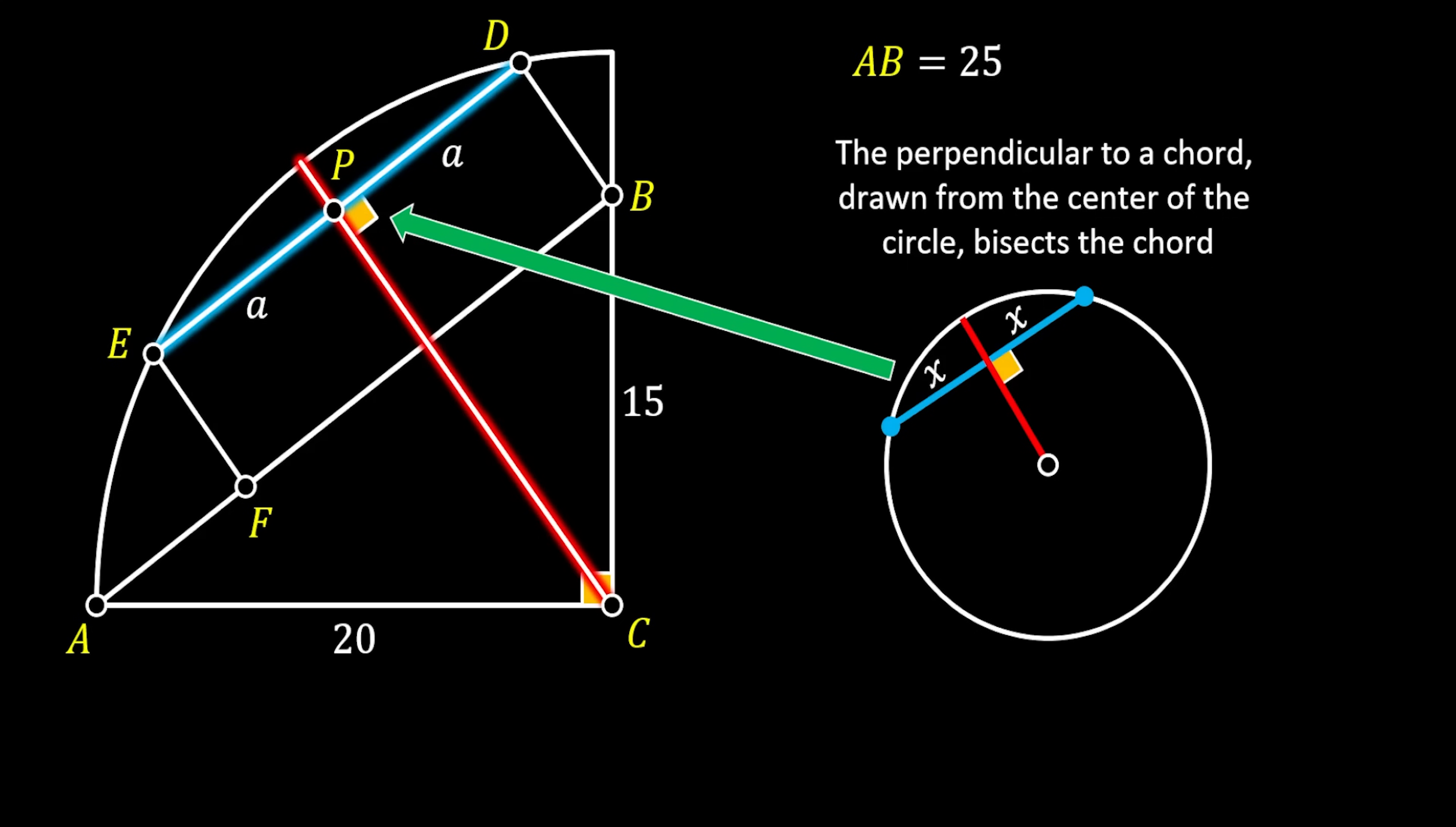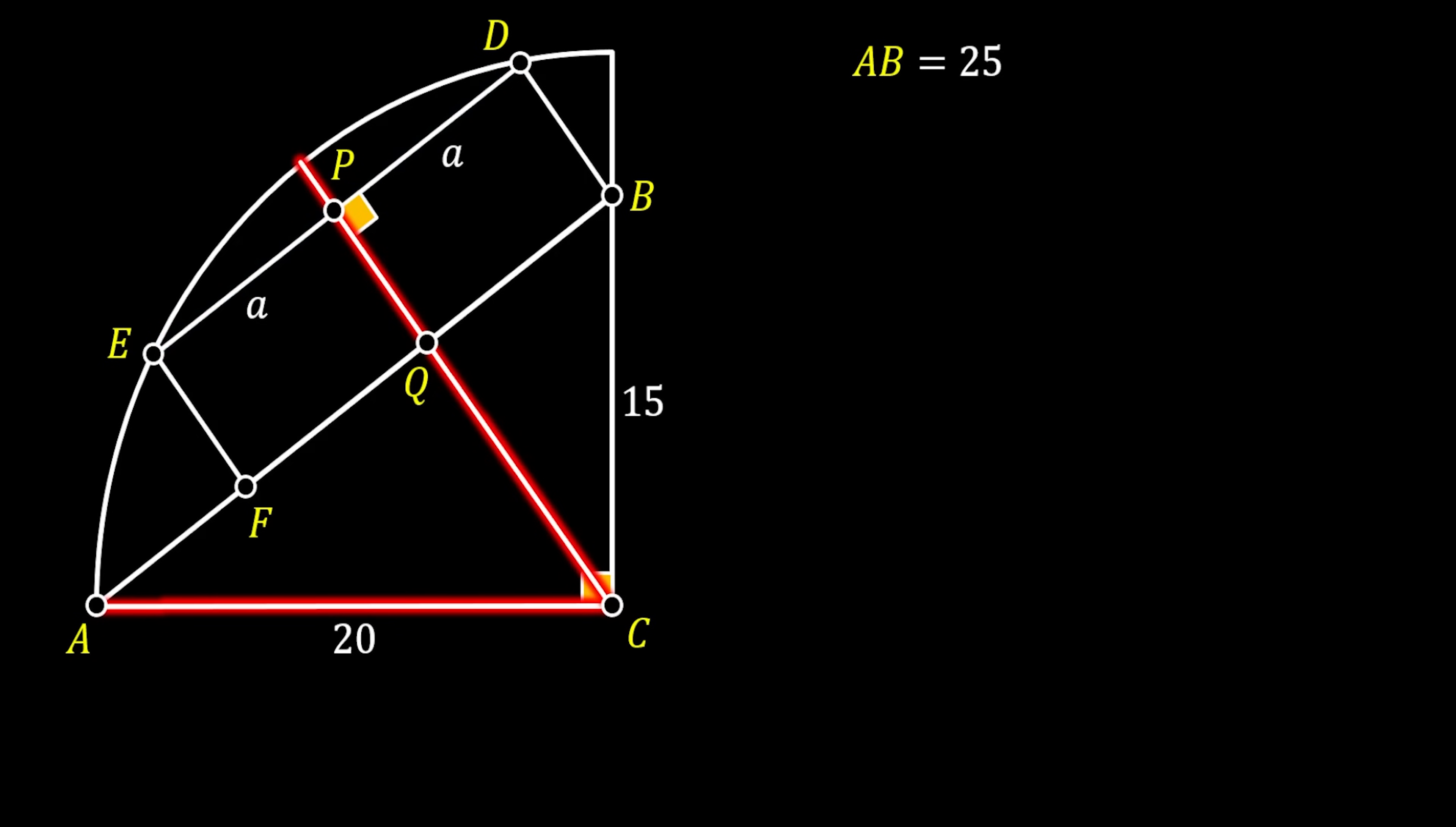Now, we can also label the intersection between our radius and the line FB as Q. Now, because BDEF is a rectangle, this means that the line ED must be parallel to the line FB. So, this means that the angle at the point Q must be a right angle as well. Now, let's notice the segment PD with the length of a. We can slide it down and get that QB must also have the length of a. And let's try to find this length a.